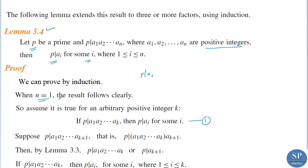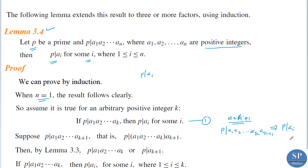Now we have to show that the result is true for n = k+1. We assumed the result is true for n = k, meaning if p divides a₁·a₂·…·aₖ then p divides aᵢ for some i. For n = k+1, we have to show that if p divides a₁·a₂·…·aₖ·aₖ₊₁, this implies p divides aᵢ for i varying from 1 to k+1.